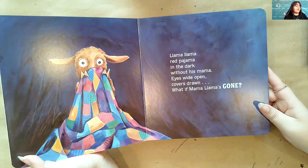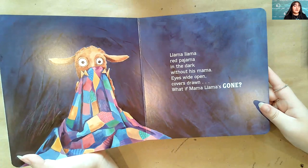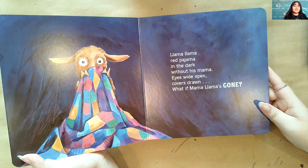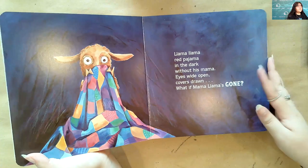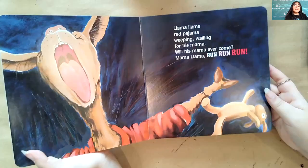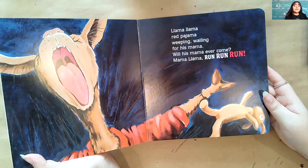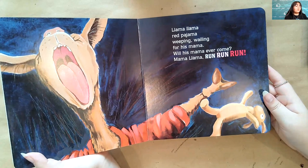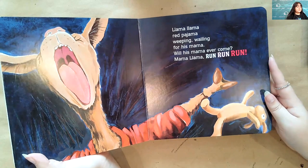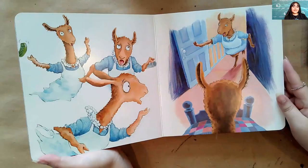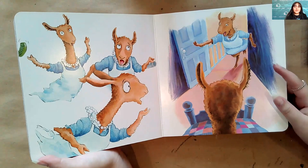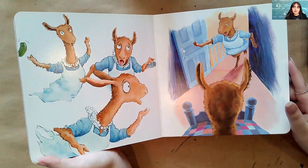So Llama Llama Red Pajama in the dark without his mama. Eyes wide open, covers drawn. What if Mama Llama is gone? Llama Llama Red Pajama weeping, wailing for his mama. Will his mama ever come? Mama Llama, run, run, run, run. Okay, that seemed to get her attention, right? Now she's storming through the kitchen. She's supposed to open the door, see what's wrong with Baby Llama.